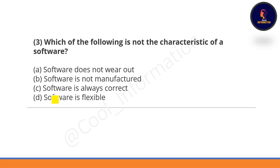Question 3: Which of the following is NOT a characteristic of software? Option C — 'software is always correct' — is not a characteristic of software, because software may be incorrect also. So Option C is correct.